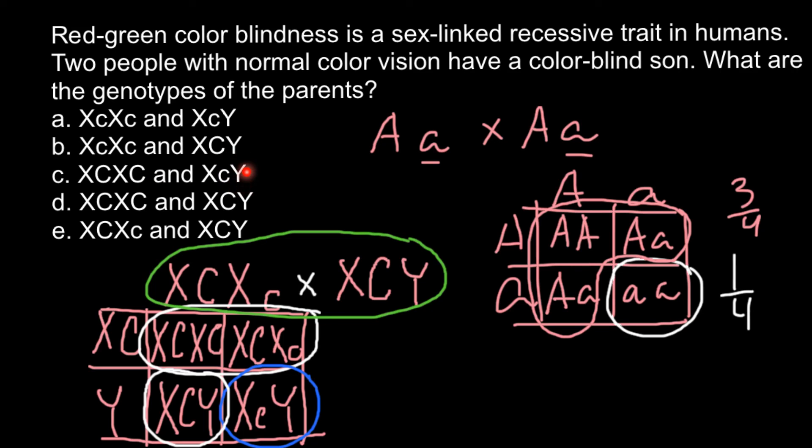They would produce normal sons because the father would give his sons only the Y chromosome, and the mother would give either her normal X chromosome — so all progeny would be phenotypically normal. Answer D has all normal alleles, so such a cross is unable to produce affected progeny, whether sons or daughters. The only correct answer is Answer E. That is all for today — thank you for your attention, please subscribe for my new videos that I post almost every day, thumbs up if you like this video, goodbye.